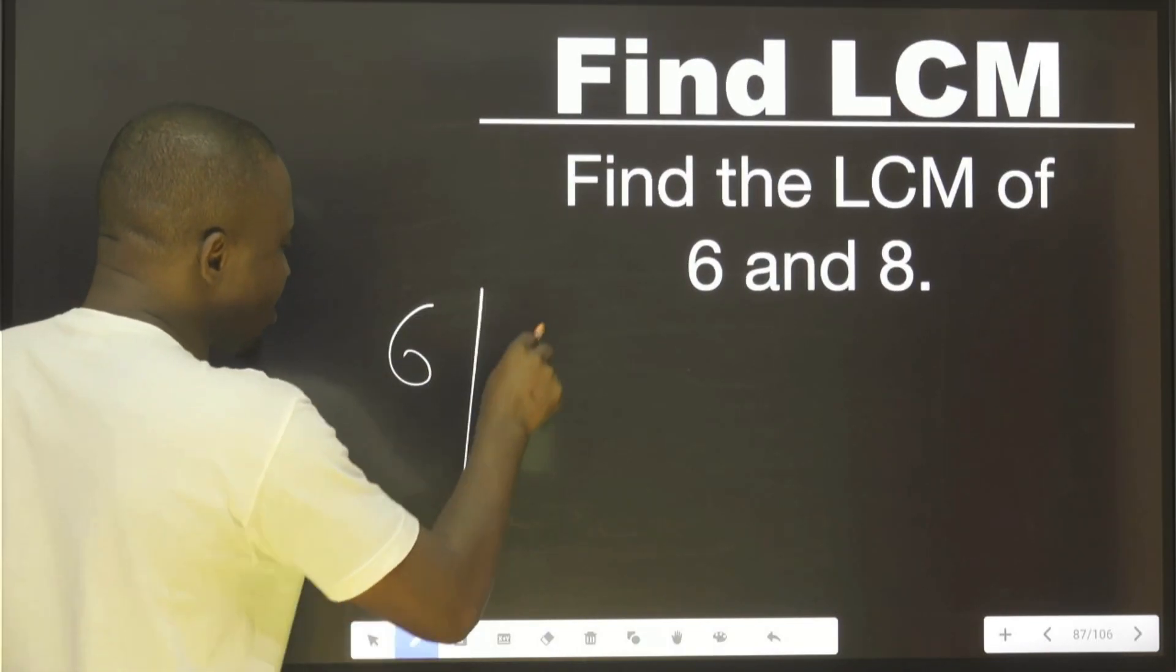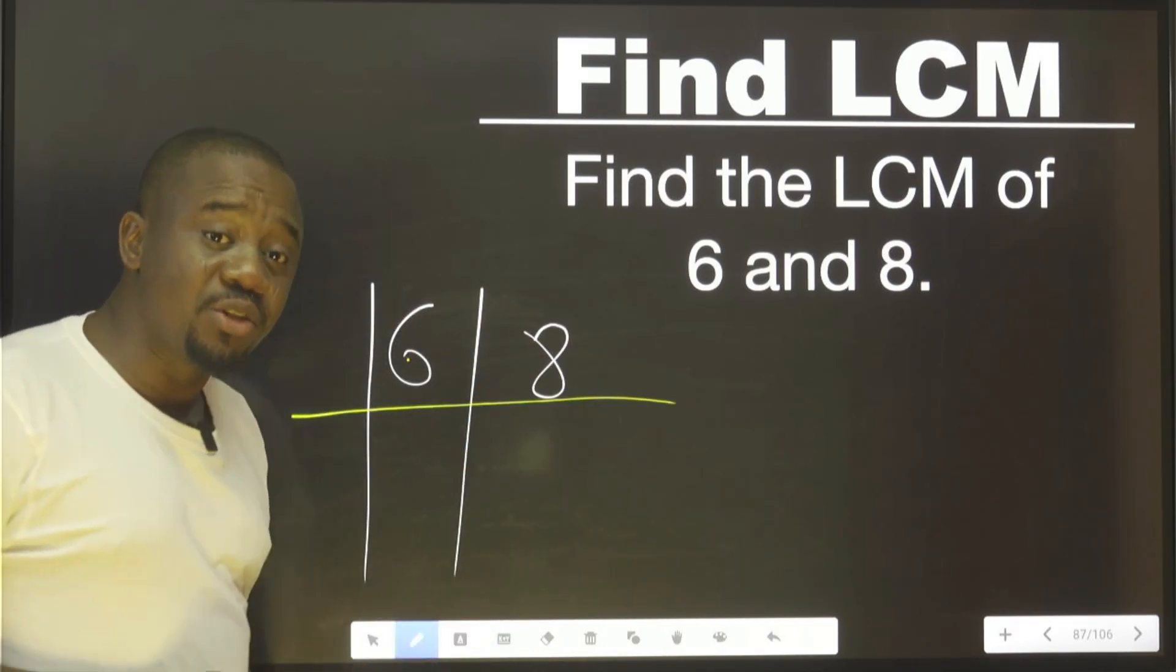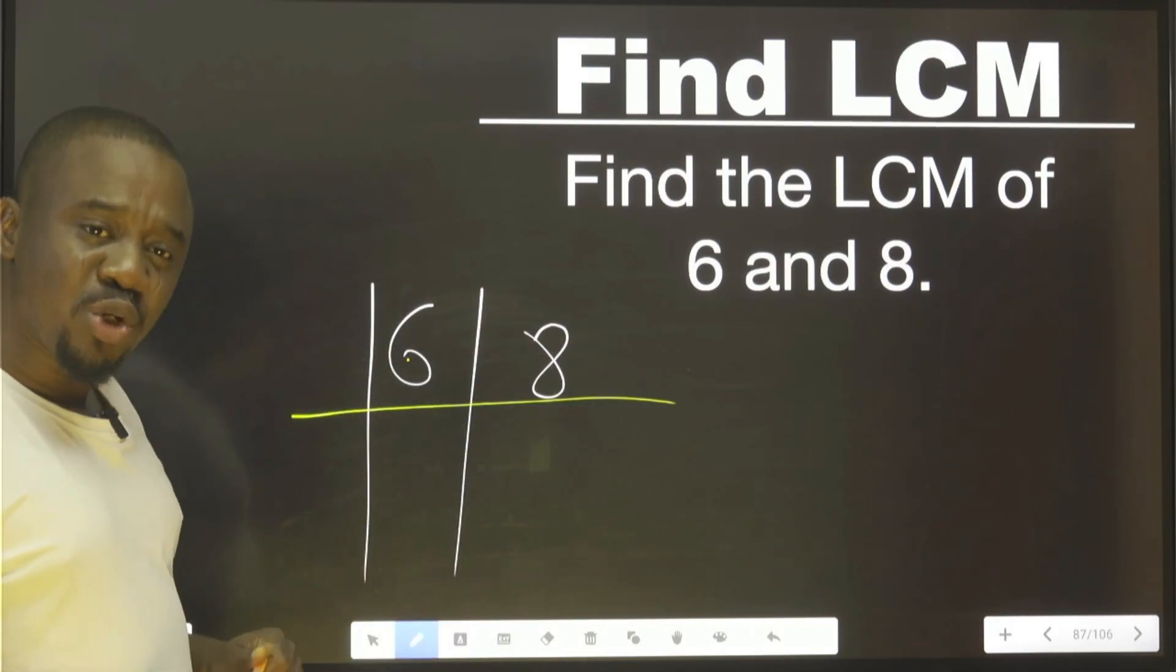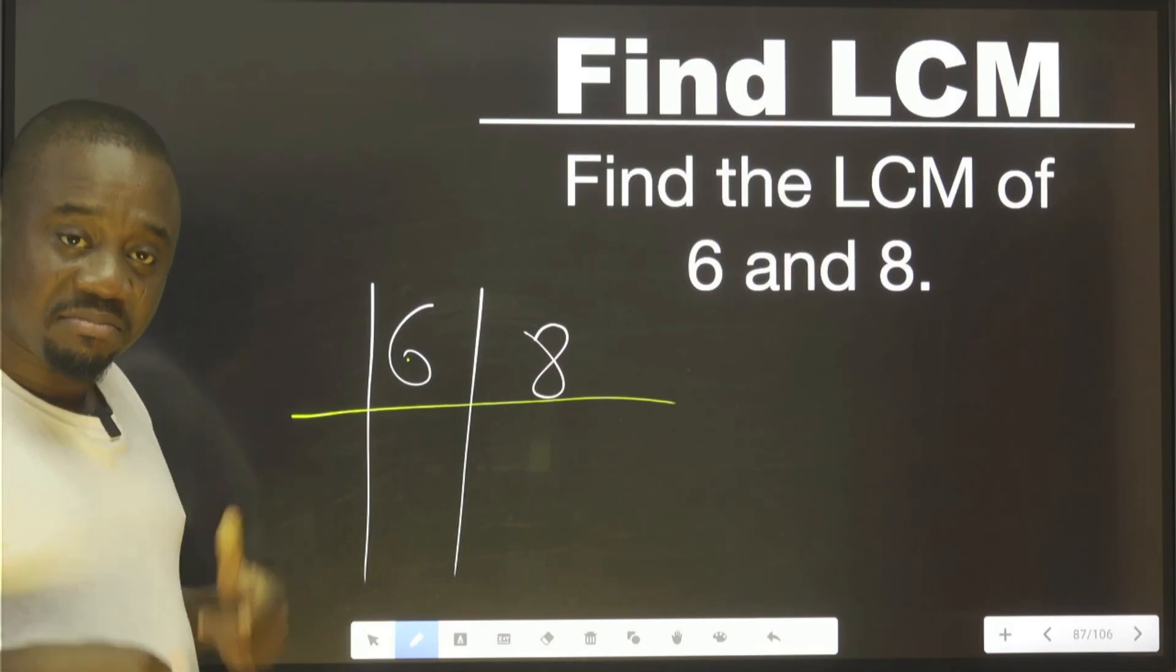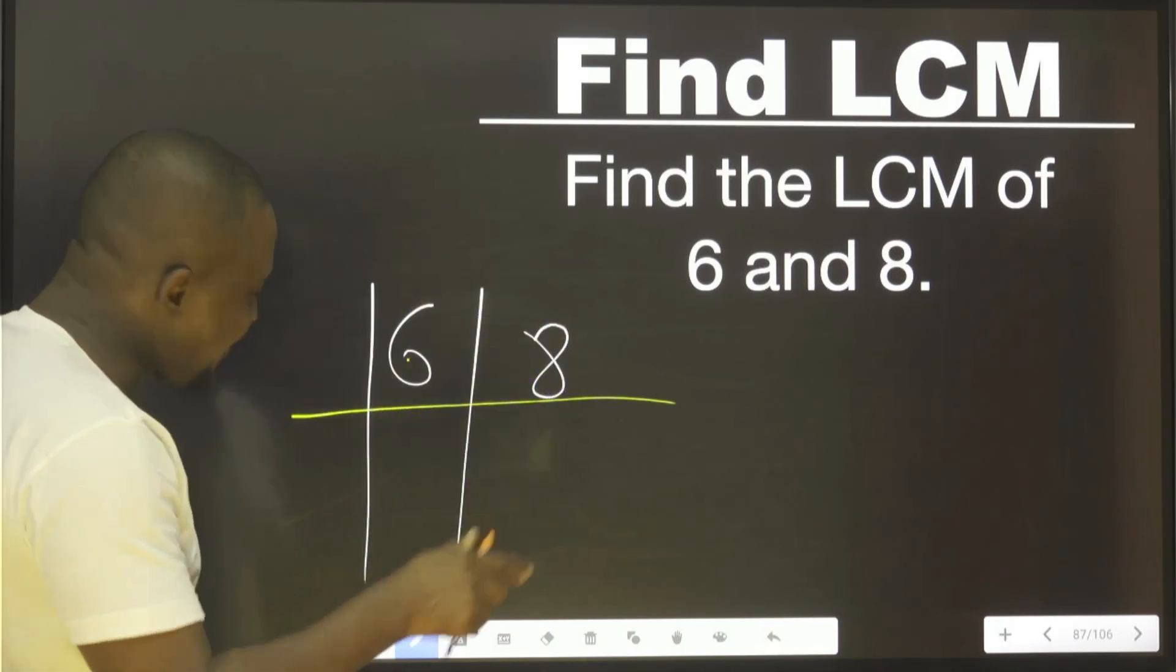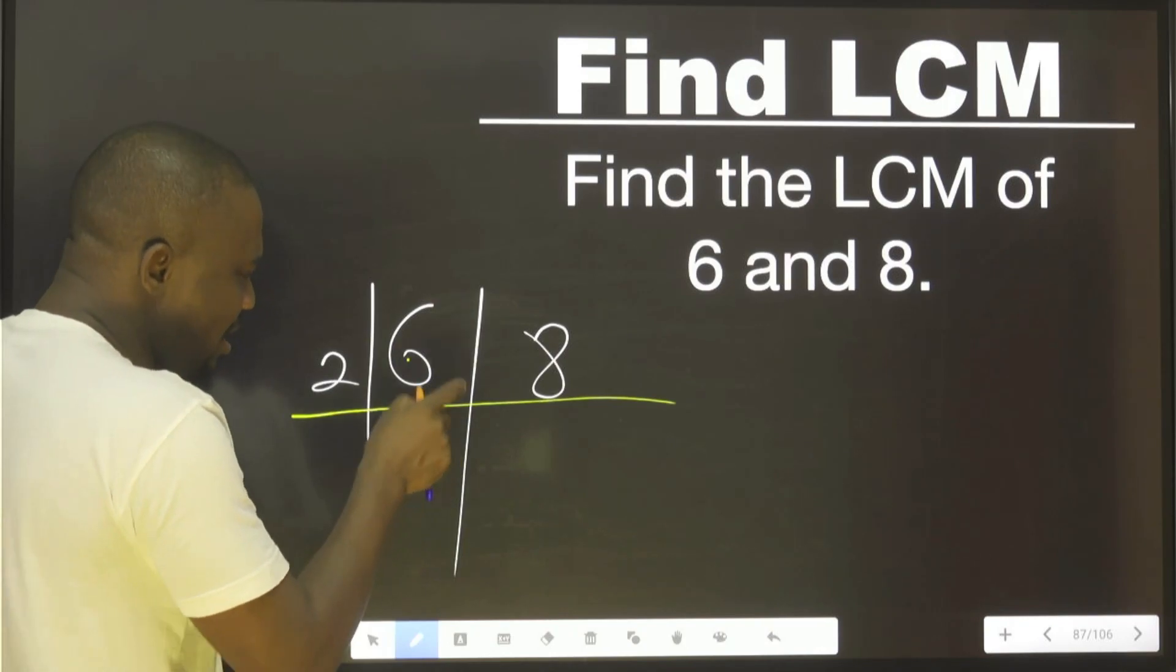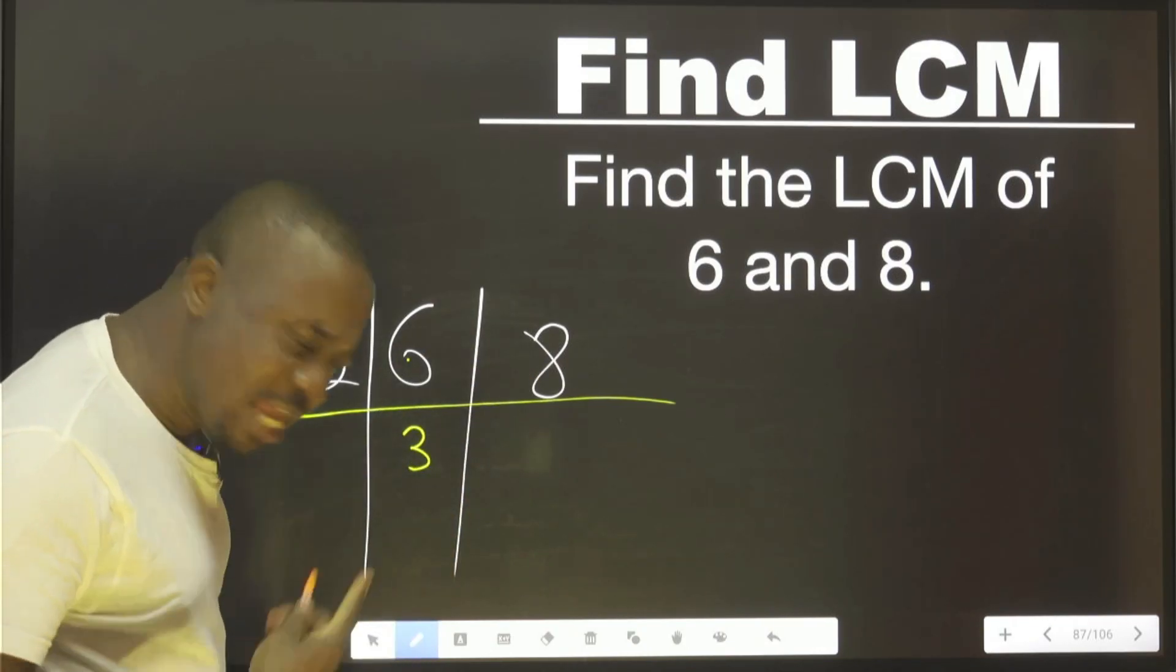Write these two down. The first thing I need to do, what can I need to divide this without any remainder? Two, don't think about the other guy first. Just put two here. Two here is three. Can two also go this? Yes. Then you continue.